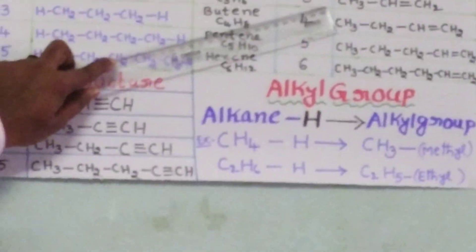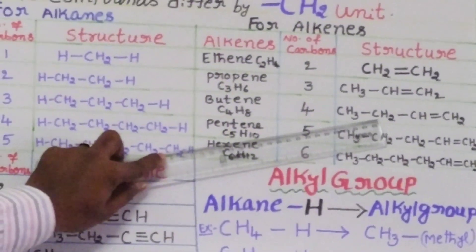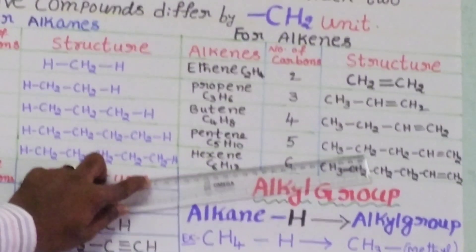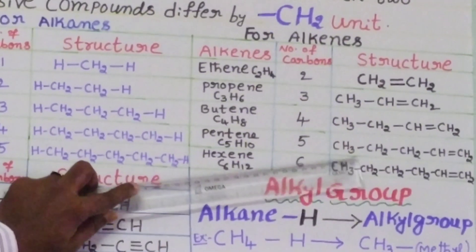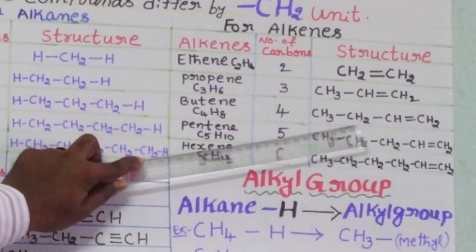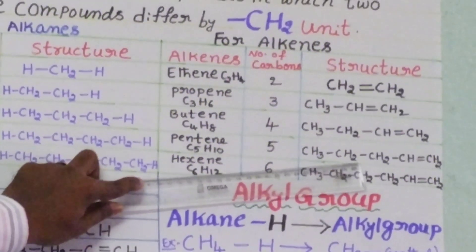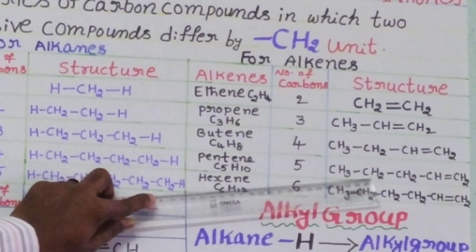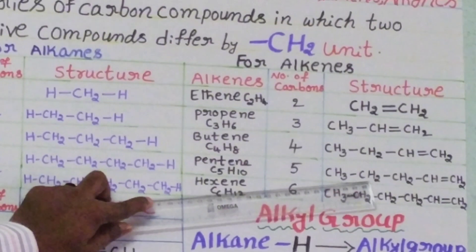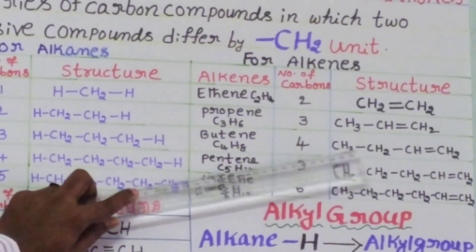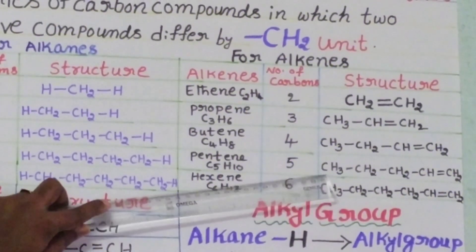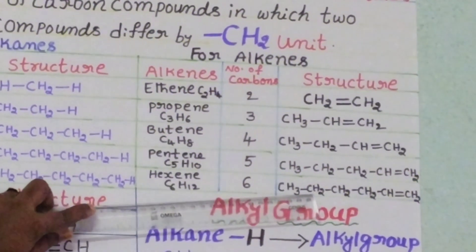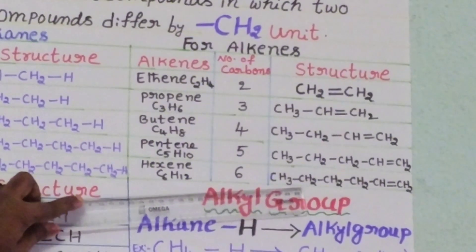When we observe propene and butene, there is an increase of one CH2 unit. When we observe pentene, there is an increase of one more CH2 unit. Butene has one CH2 unit and pentene has two CH2 units, with the remaining structure the same. That means there is a difference of one CH2 unit between pentene and butene. Similarly, when we observe hexene and pentene, there is also a difference of one CH2 unit. This is called a homologous series of alkenes.